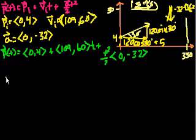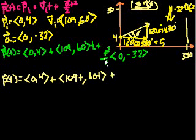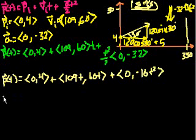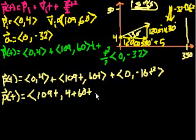Let's see if we can simplify this. So our position vector t is equal to 0, 4, plus, and now we can distribute this t, plus 109t, 60t, plus, and we can distribute this t squared over 2, that times 0 is 0, and then that times minus 32 is minus 16t squared. Now we can add the vectors. The position at any t: let's add all the x components, 0, 109t, 0, so we just get 109t. And then the y components: 4 plus 60t minus 16t squared.